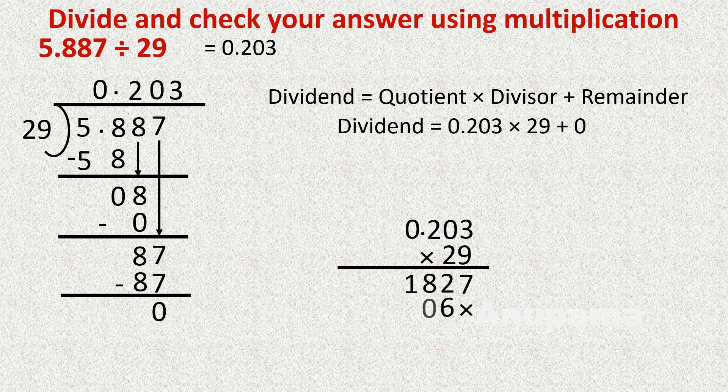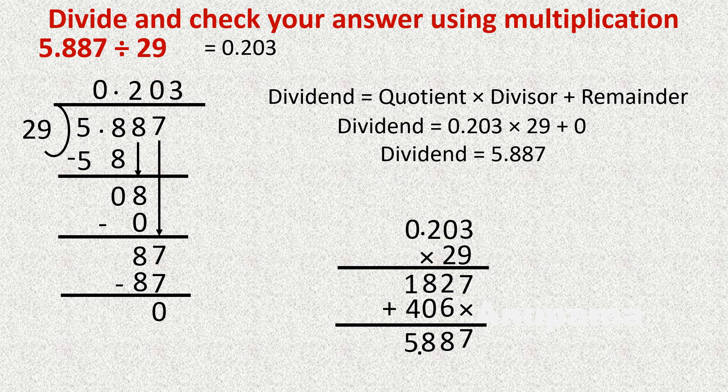9 twos are 18. We mark a cross, then multiply by 2: 2 threes are 6, 2 zeros are 0, 2 twos are 4. We add: 6 plus 2 is 8, 4 plus 1 is 5. We place the decimal point because there are 3 decimal places in 0.203, so the product also has 3 decimal places. The answer is 5.887, which equals the dividend.